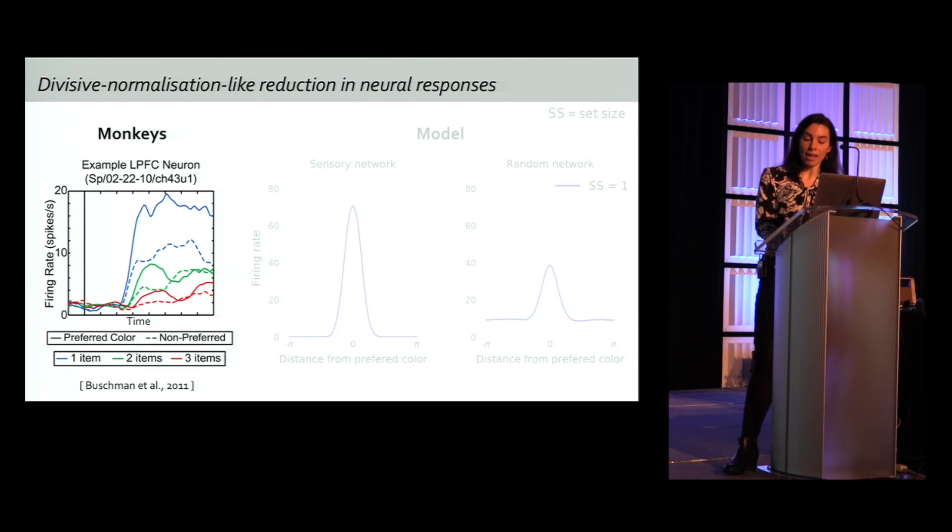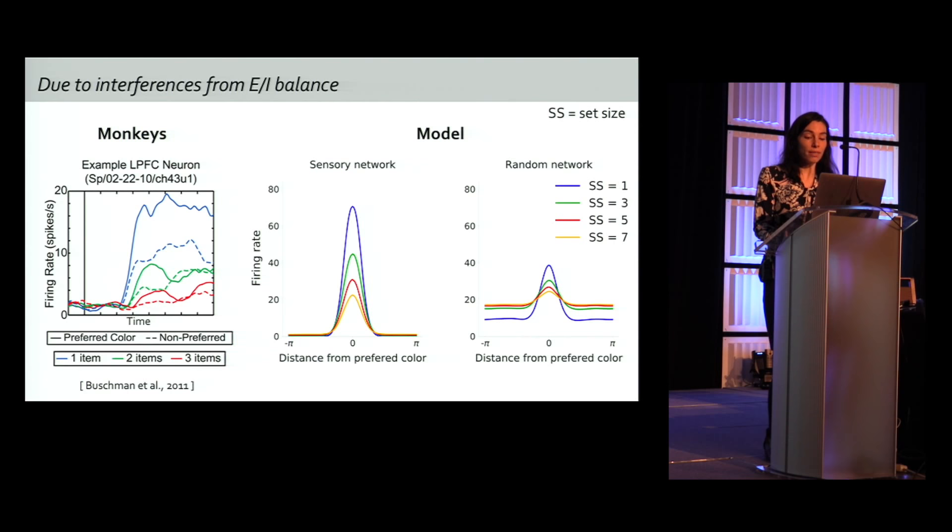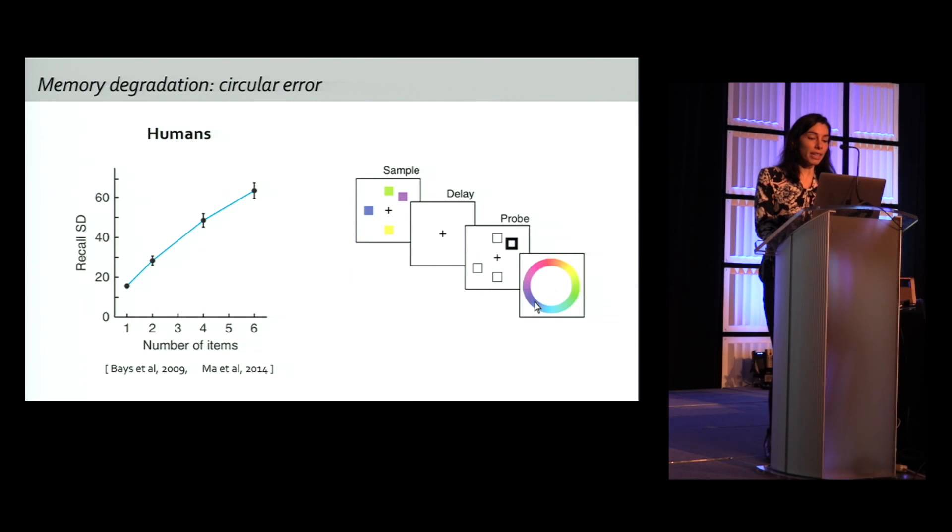Now, what's happening when we increase load? In this monkey study on the left, the firing rate of lateral prefrontal cortex neuron decreases with load in red and green here. It's a kind of divisive normalization like reduction in neural responses. And we retrieve the same effect in our model due to interference between memories. Here, again, the firing rate of sensory neuron decreases when we increase the set size. So when we had input in the other sensory networks. And we found the same result in the random network. Obviously, coding in the random network is conjunctive. But here, we focus on the selectivity aligned to the first sensory network. And we add inputs to the other sensory networks. And so because of interference and an increase of effective inhibition, the firing rate decreases with load.